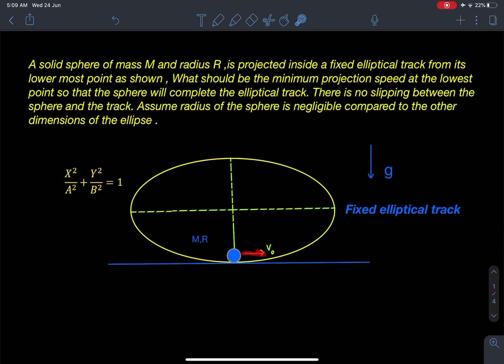It is in the form of a solid sphere. Its mass is M, radius is R, and it is projected with velocity V₀. The equation of ellipse is also given, and that is x²/a² + y²/b² = 1, so a standard equation of ellipse is given.